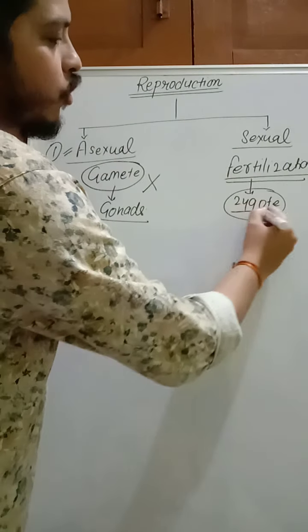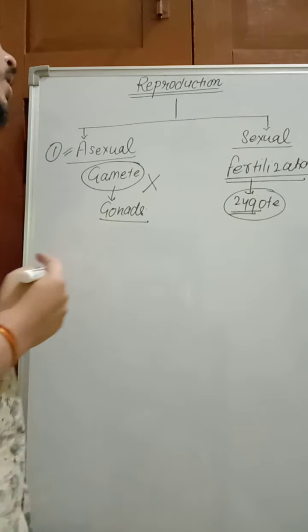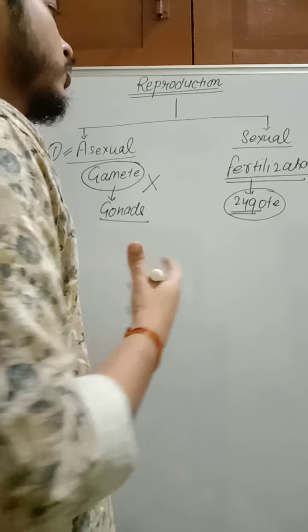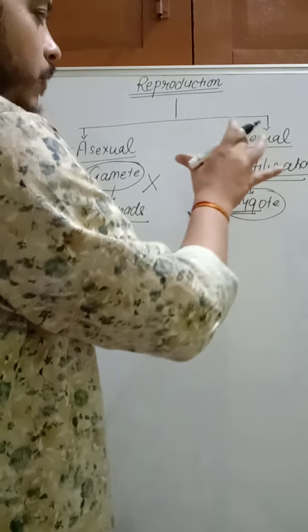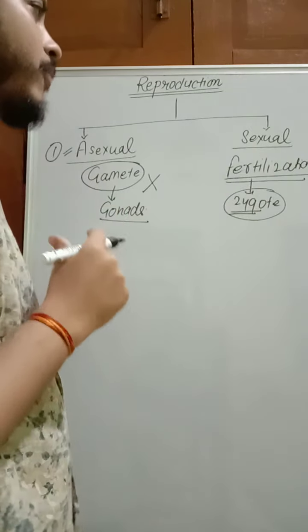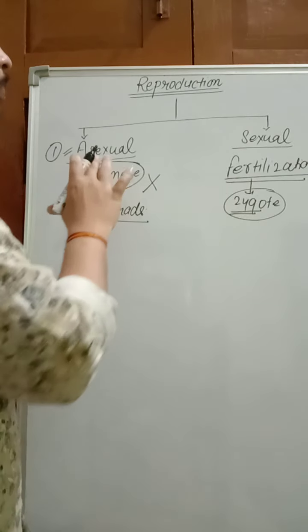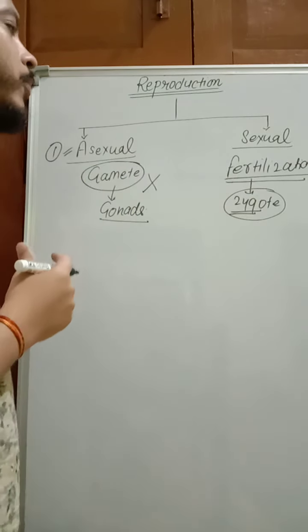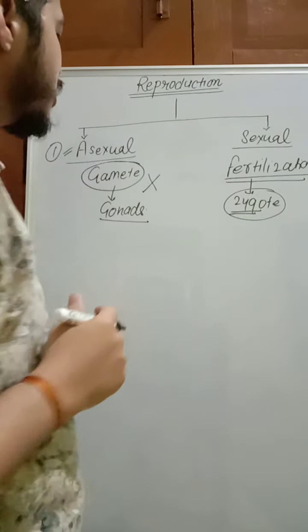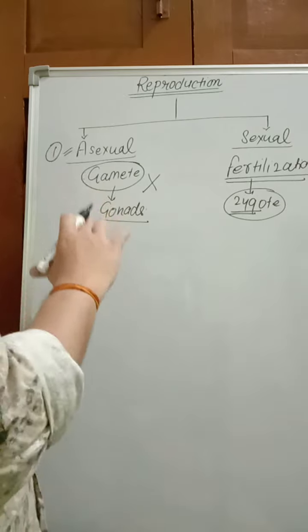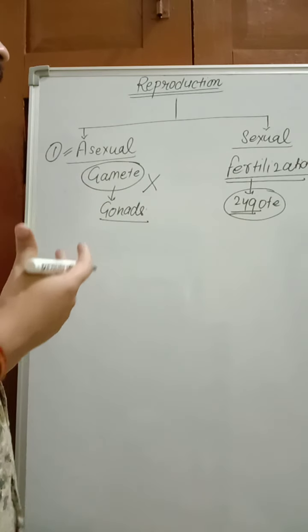These zygotes are developed into a new individual. That is fertilization and the involvement of gametes in sexual reproduction. Another difference: in asexual reproduction there is no involvement of gametes, so variation cannot take place.